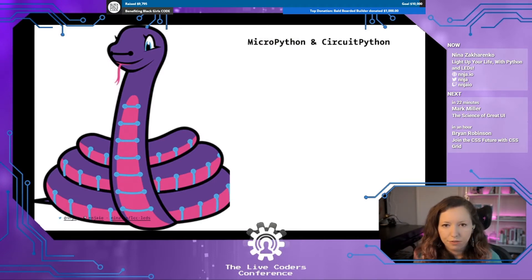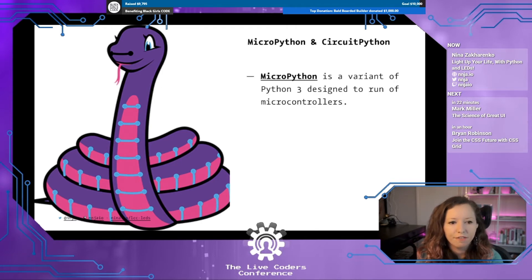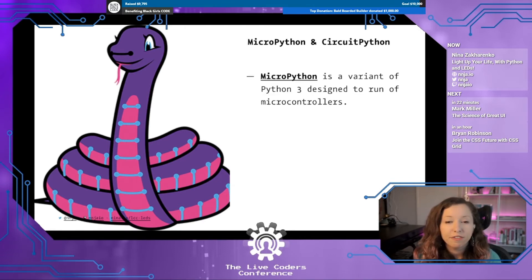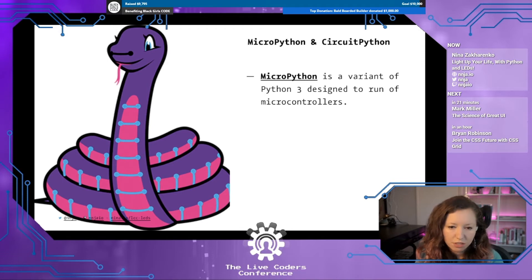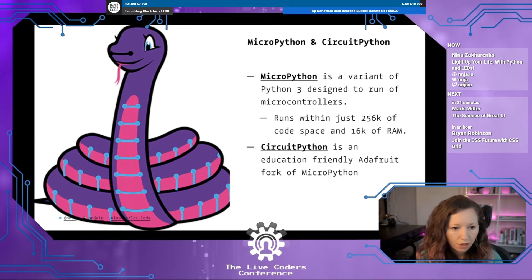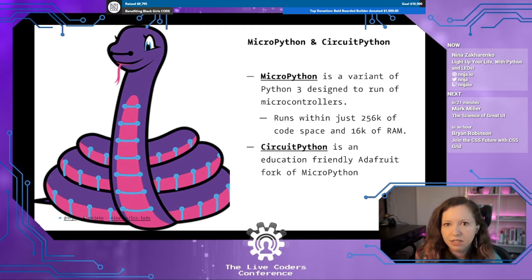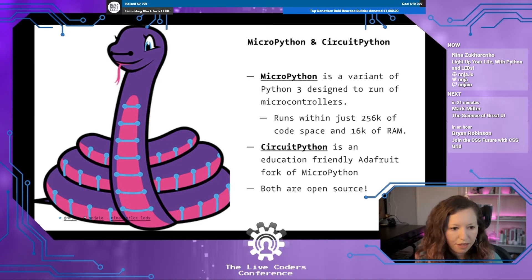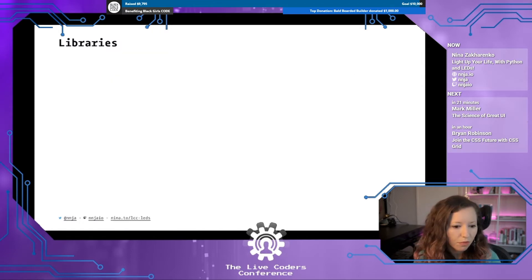MicroPython and CircuitPython — I see a lot of folks get confused about these two. MicroPython is a variant of Python 3 designed to run on microcontrollers. It's compact enough to fit and run within just 256 kilobytes of code space and 16 kilobytes of RAM — it's what runs on the microbit, very focused on performance and portability. CircuitPython is an education-friendly fork of MicroPython. It used to target mostly just Adafruit devices but in the past year they've really opened up their platform. Since I'm going to be showing demos on Adafruit hardware, I'll be using CircuitPython. Both are open source, so if you're interested in contributing, that's a great opportunity.